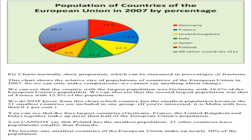The second largest population was that of France with 12.8%. We do not know from this chart which country has the smallest population because the 21 smallest countries are included in one group. If you are interested, it is Malta with less than 0.1%. The four largest countries — Germany, France, the United Kingdom, and Italy — together make up more than half of the European Union's population. The 21 smallest countries make up nearly 30% of the population.